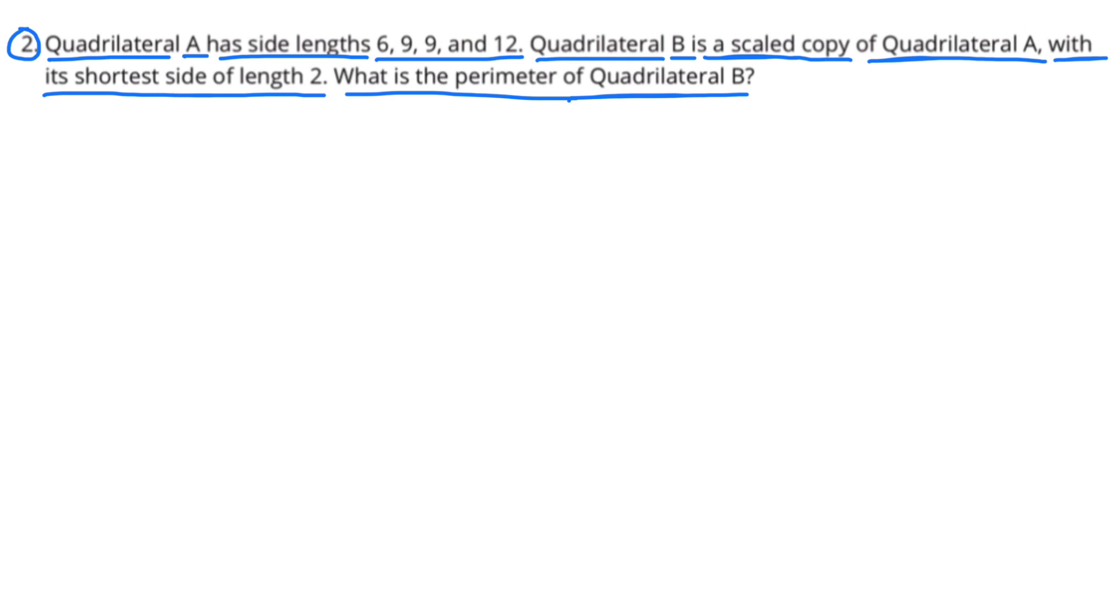What is the perimeter of quadrilateral B? I highlighted in green some important information. The shortest side length is 2, and the shortest side length of the original is 6. So it went from 6 to 2.